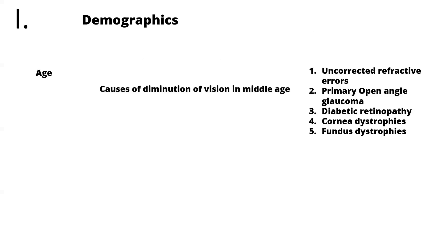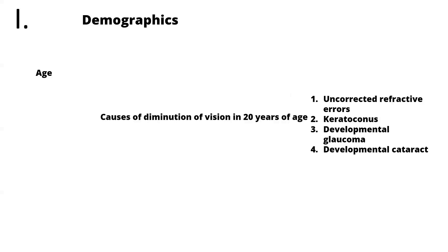Causes of diminution of vision in middle age: you'll be thinking about uncorrected refractive errors, primary open angle glaucoma which can start around 40 years of age, diabetic retinopathy, and corneal and fundus dystrophies. For causes in younger individuals — below 20 years of age — you'll think of uncorrected refractive errors, keratoconus, developmental glaucoma, developmental cataract, and fundus dystrophies like retinitis pigmentosa.